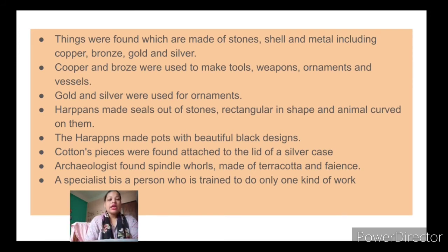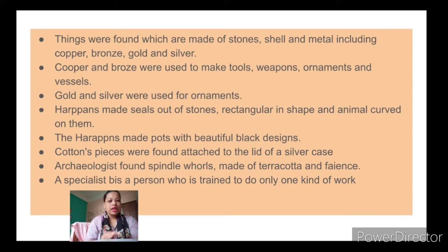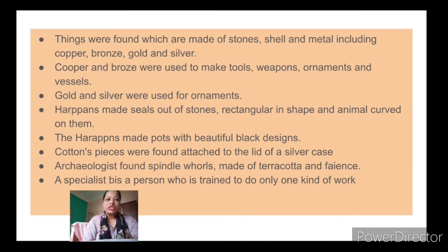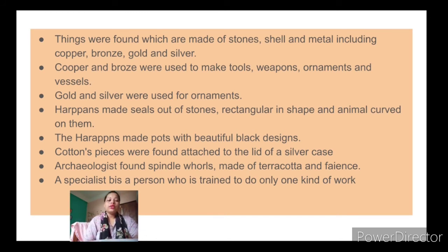Copper and bronze were mainly used for making tools, weapons, ornaments, and vessels. Gold and silver were mostly used for making ornaments — just as we wear gold and silver ornaments today. Harappans also made seals out of stones, rectangular in shape, with animals carved on them. These stone inscriptions are known as seals, and many animal sculptures were carved on them.